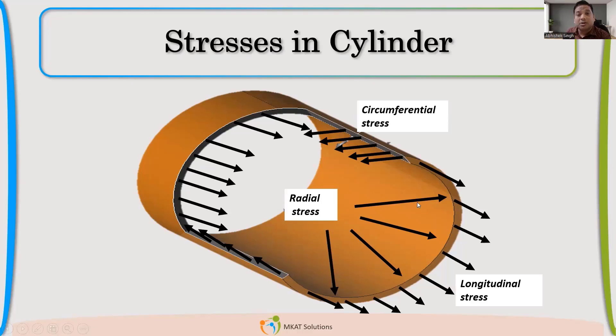Radial stresses are normal to the inside wall. These are the radial stresses. These are the three major stresses, principal stresses, which are created because of internal pressure. Yes, these are the primary stresses.